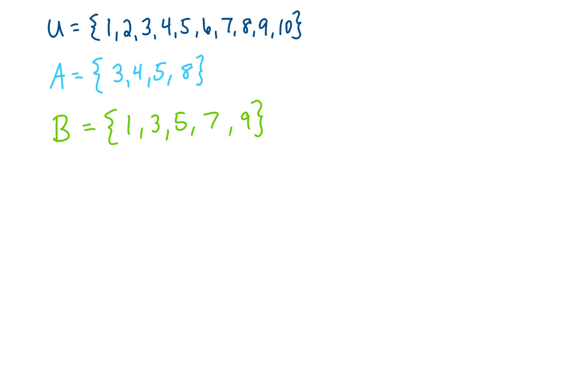Now you'll notice that there are elements in A that are not in B, there are elements in B that are not in A, and there is some overlap between these two sets. There are some elements that are in both A and B. So if this is the case, our Venn diagram is going to look something like this.